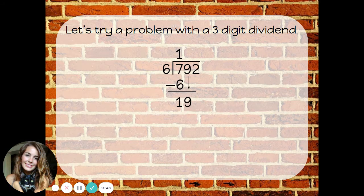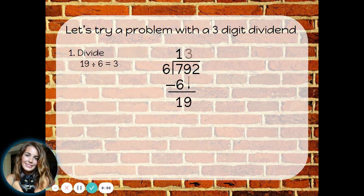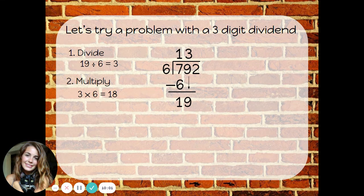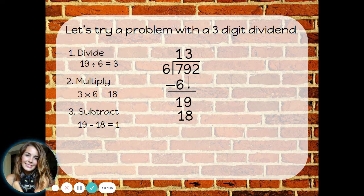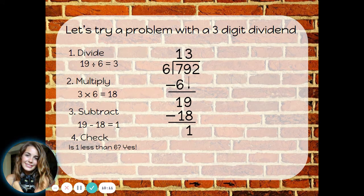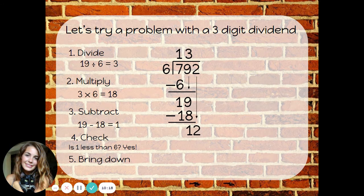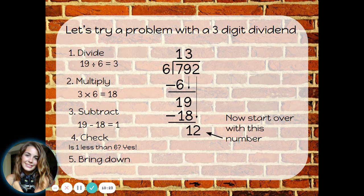Starting over with divide: 19 divided by 6. Let's see — 6, 12, 18. I can make 3 groups of 6. Multiply: 3 times 6 is 18. Subtract: 19 minus 18 is 1. Check: is 1 less than 6? Yes. Bring down the next number — this time I do have another digit to bring down. I have to start over using the number 12 that I created at the bottom.